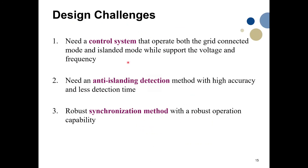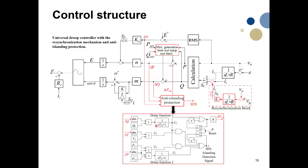To summarize the control requirements: the controller must operate in both grid-connected and islanded modes, support microgrid voltage and frequency regulation, and include an anti-islanding detection technique and an online synchronization technique. We have implemented all of these in our universal droop controller — integrating the islanding detection technique, online synchronization, offline synchronization, and voltage and frequency regulation capability.